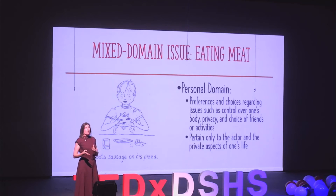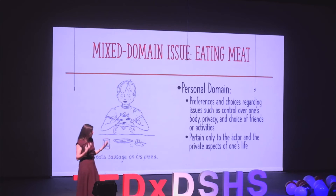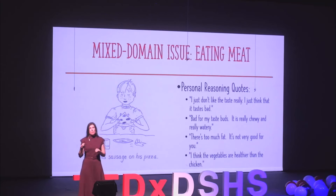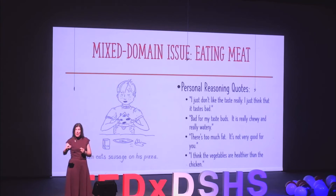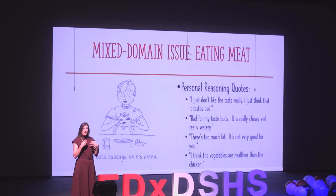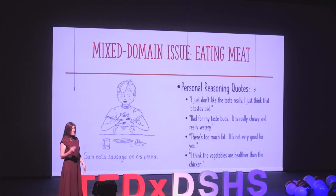It's also possible that some children look at eating meat as part of the personal domain — an event that just impacts them, their choice of what to put in their body, outside of judgment from others. I did find that some of my participants focused on eating meat from this personal perspective, with reasoning like not liking the taste of it, or focusing on health aspects — preferring healthier options or wanting more vegetables in their diet. These explanations are focused on the personal nature of eating meat and how it only impacts them.